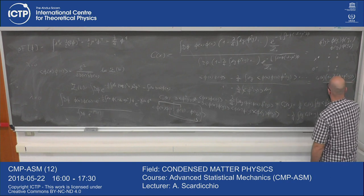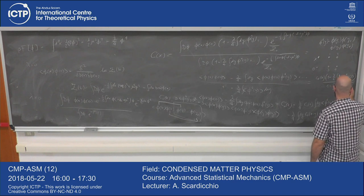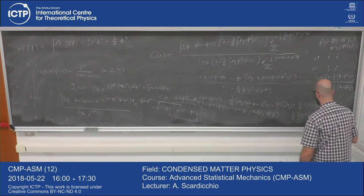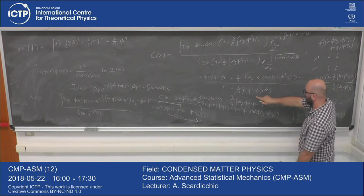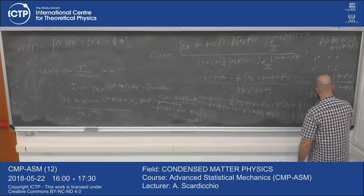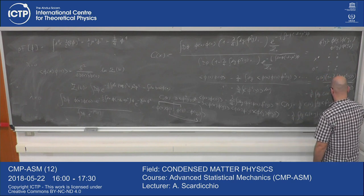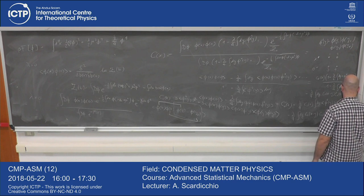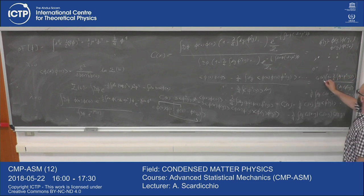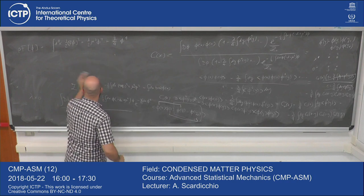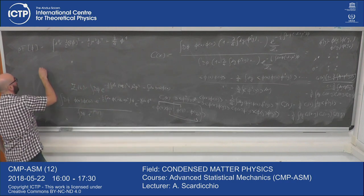And then there is another term: minus lambda over 4 integral dy, C_0 of x minus y, C_0 of 0 minus y, and then C_0 of y minus y. Combining, we see that the first term is C_0 of x multiplied by one minus lambda over 4 times integral dy of the average of phi to the fourth of y, divided by one minus lambda over 4 times integral dy of the average of phi to the fourth of y. So this drops out, and this second term is the actual correction.